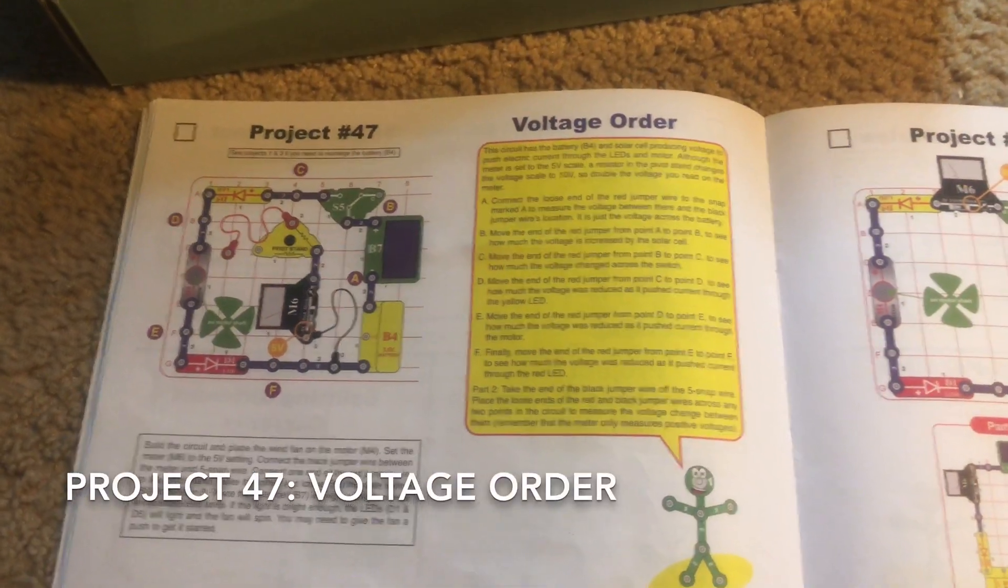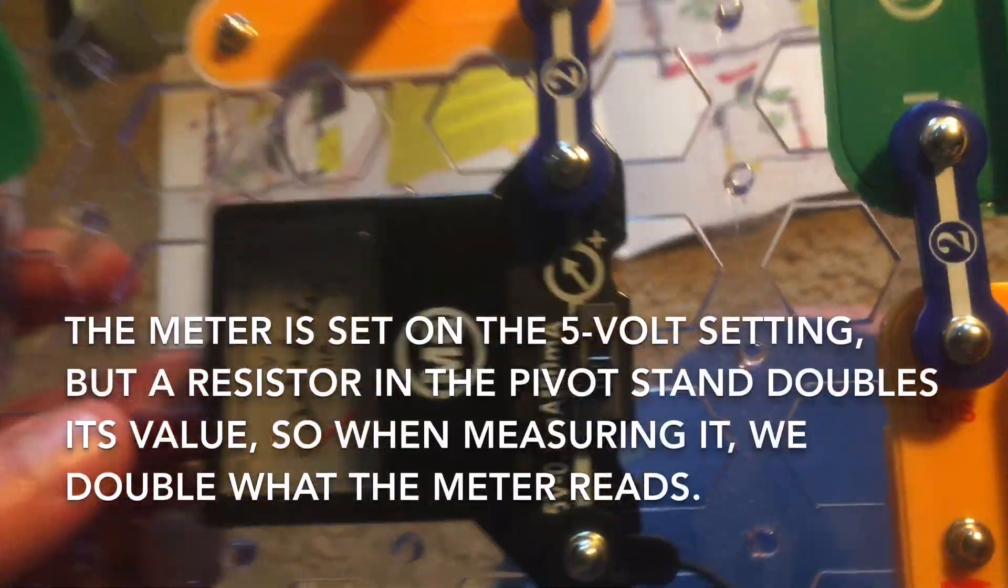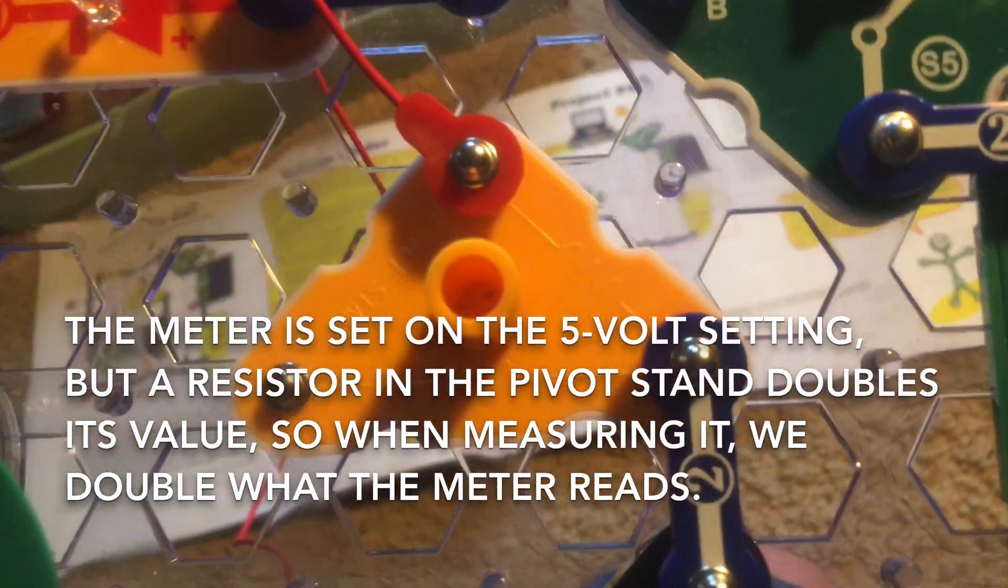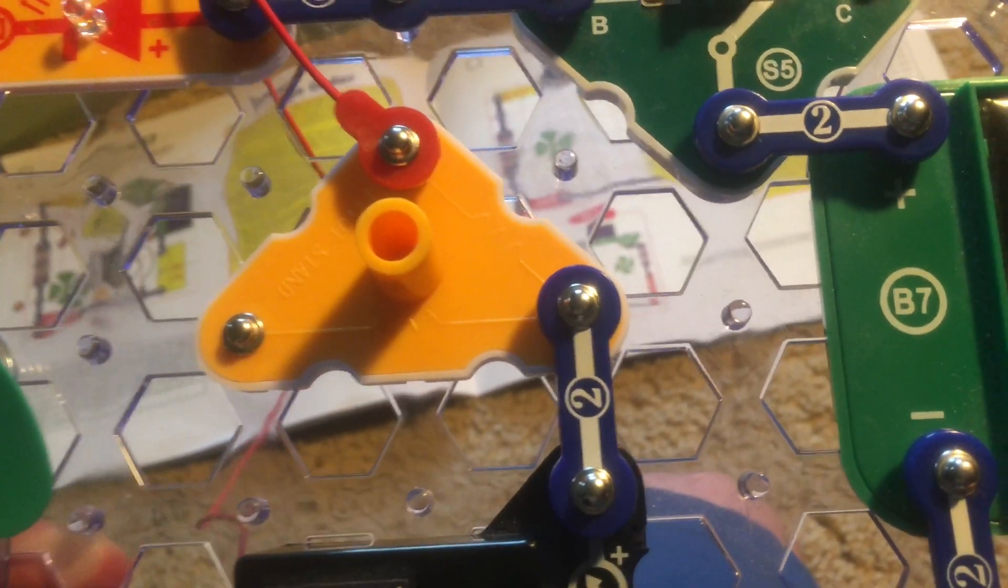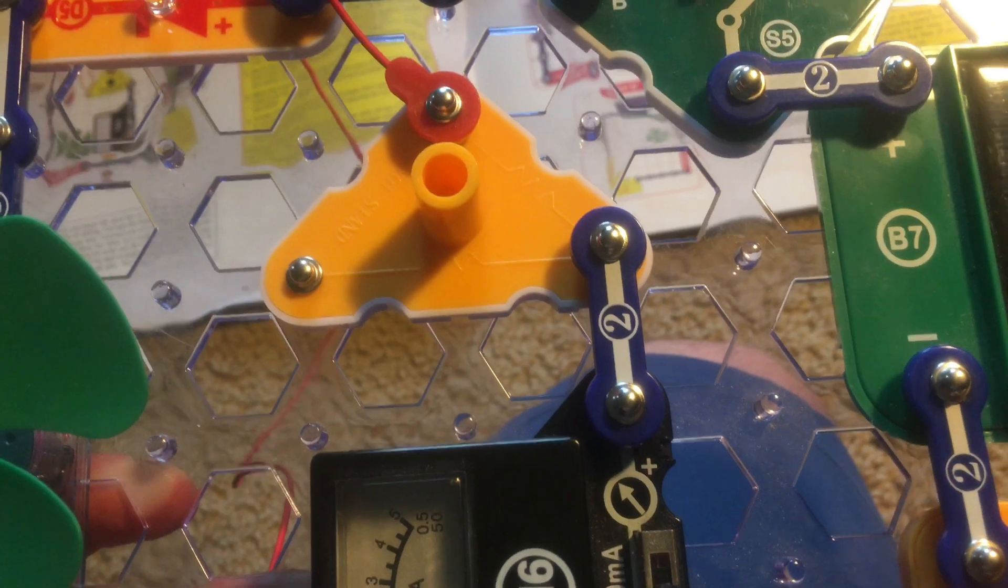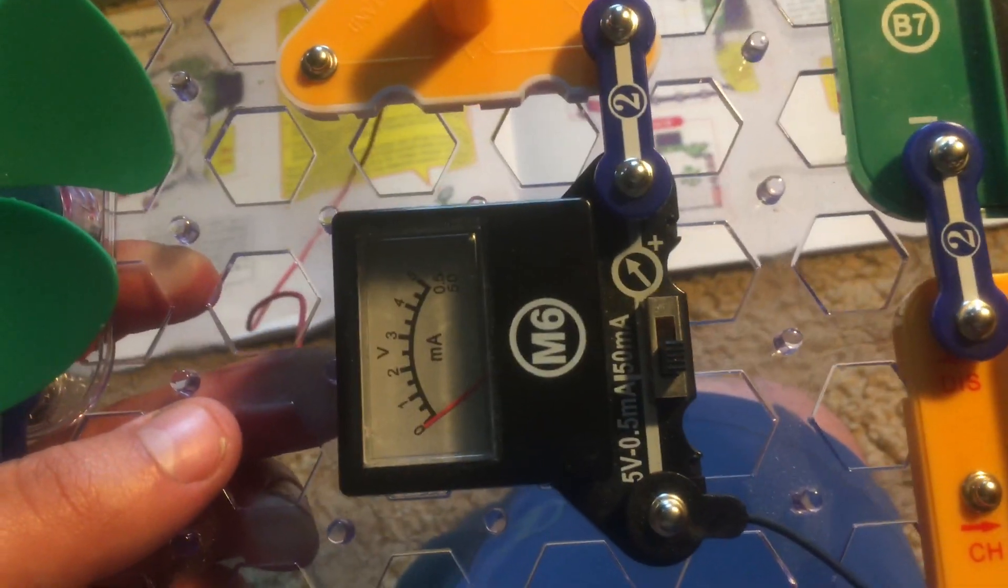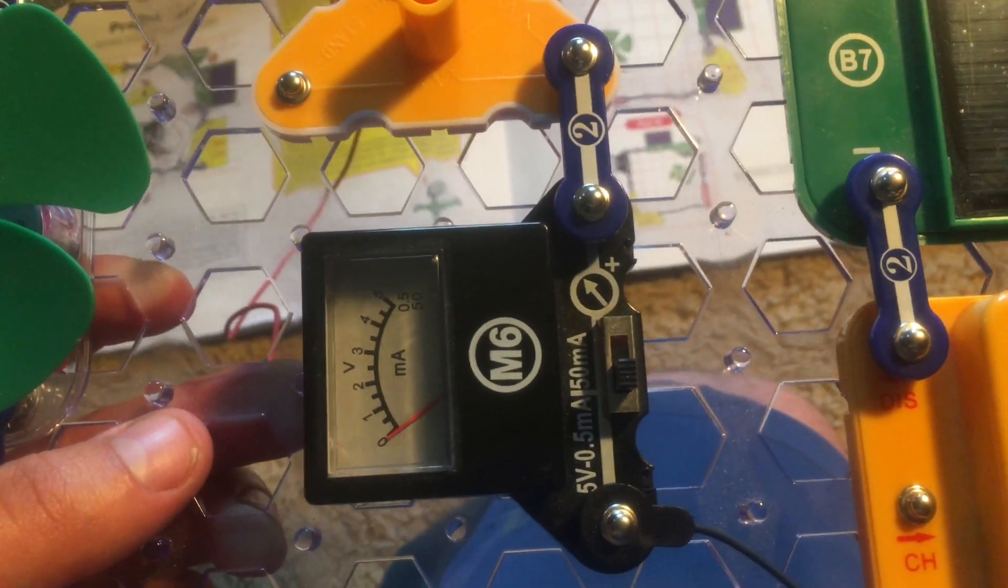For project 47, voltage order, we will have the meter set to the 5 volt setting. But realize that a resistor in the pivot stand changes the value to 10 volts. It doubles the value. So that means any readings that we get on the meter, we will multiply by 2.